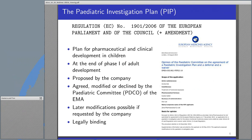The European pediatric regulation requires that every developer of a medical product proposes a pediatric investigation plan, called PIP, for the pharmaceutical and clinical development in children. This is done very early in the drug development process, already at the end of phase 1 of the adult development program usually. This plan is then evaluated, agreed, modified, or declined by the pediatric committee, called PDCO. Later modifications are possible if requested by the company, and the outcome of this process is legally binding.